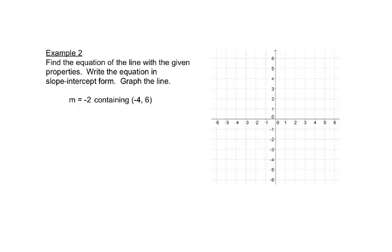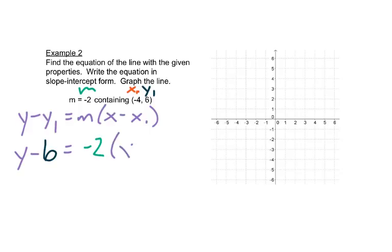It says find the equation, and then we're going to change it to slope-intercept form, and then we'll graph the line. So this will be our x₁, this will be our y₁, and this is our m. We have y minus y₁ equals m times x minus x₁. That will give us y minus 6 equals negative 2 times x minus negative 4. So we have minus a negative 4. Remember, that really is just a positive.